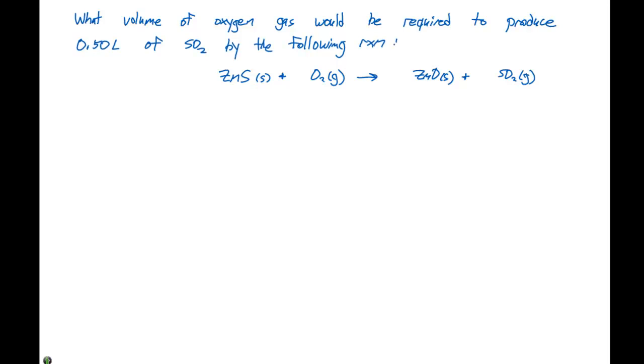What volume of oxygen gas would be required to produce 0.50 liters of SO2 by the following reaction? And here we're given a reaction that says zinc sulfide plus oxygen gas giving us zinc oxide plus SO2 gas.